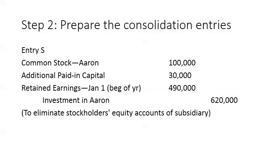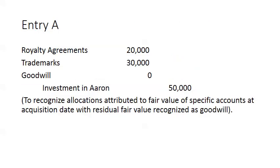Step 2 is to prepare the consolidation entries. The first is Entry S, where we eliminate the stockholders' equity accounts against the investment. We debit all stockholders' equity accounts at the beginning of the year — notice we use beginning retained earnings, not ending. Beginning retained earnings is $490,000. We sum those debits together and the credit is a forced figure to the investment account.